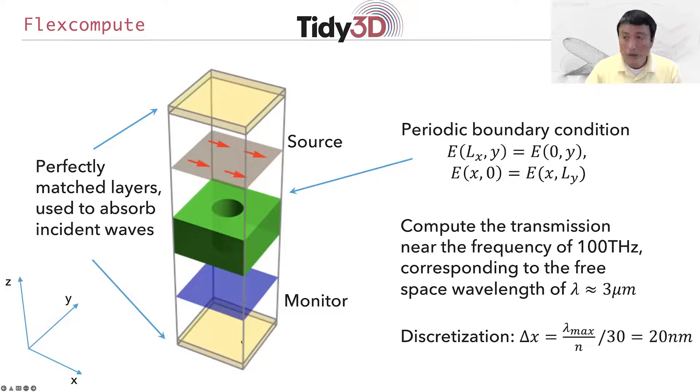On top and bottom here, we put in a perfectly matched layer boundary condition that is used to absorb incident waves. And then on the side here, we put in a periodic boundary condition to simulate an infinitely periodic structure. We excite a plane wave incident upon the structure with a plane wave source. We assume an X-polarized current to generate X-polarized incident wave. And we look at the transmitted field by looking at the flux and the field on the other side of the structure. We choose the discretization to be sufficiently small to resolve both the structural feature and the wavelengths inside the material.